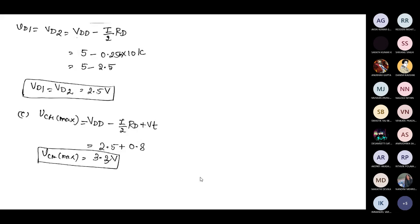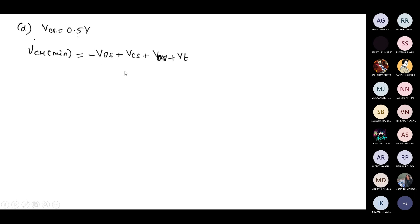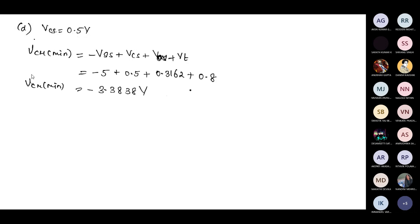For Part D, we calculate VS min and VCM min. The voltage across the current source VCS min is given as 0.5 volt. Using the equation VCM min equals minus VSS plus VCS plus overdrive voltage plus threshold voltage, and substituting the minimum VCS value, VCM min is calculated as minus 3.38 volts.